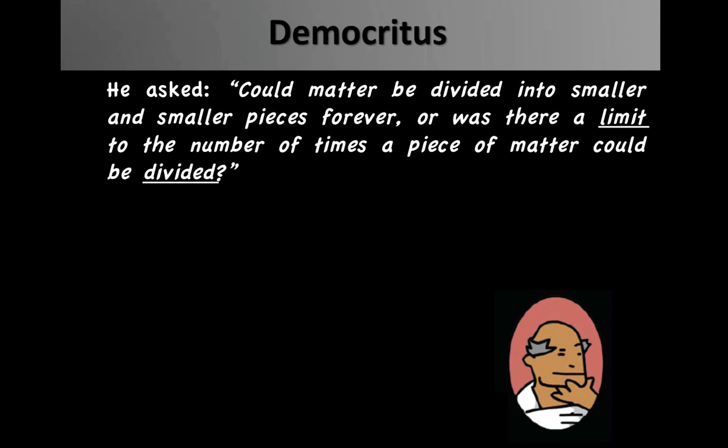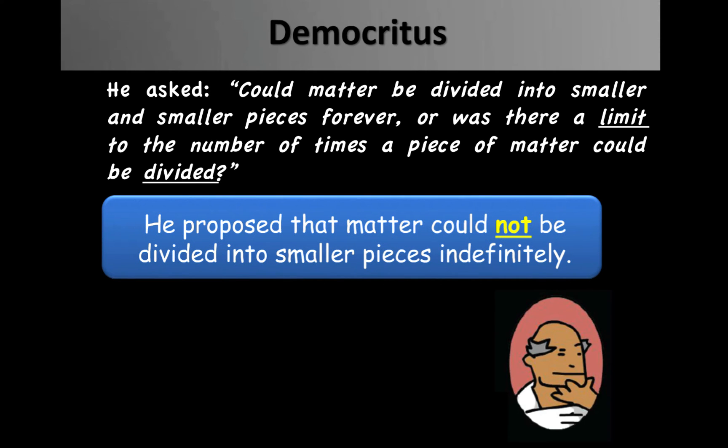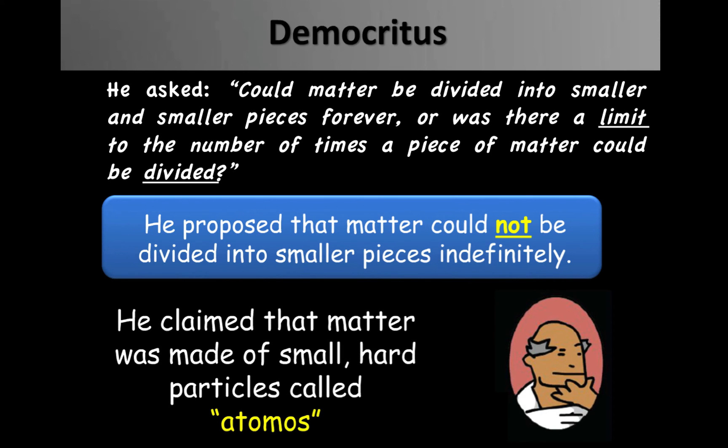Democritus asked, could matter be divided into smaller and smaller pieces forever, or was there a limit to the number of times a piece of matter could be divided? He proposed that matter could not be divided into smaller pieces indefinitely. Eventually, one would reach the atom. He claimed that matter was made of small, hard particles called atomos. This is the Greek model of an atom.